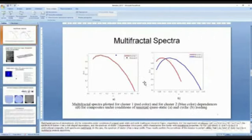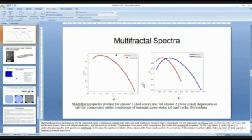And the next step is trying to make a multifractal spectrum analysis. And you can see that for composites under condition of uniaxial quasi-static cycling loading, for the experiment of composite cluster one is bell-shaped dependencies. And the spectrum of cluster two degenerates into a point which hypothesizes that these clusters have monofractal properties.